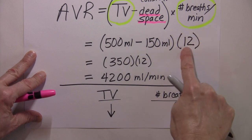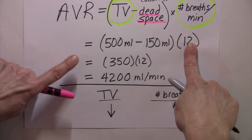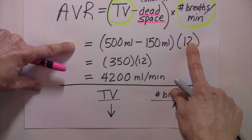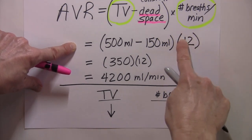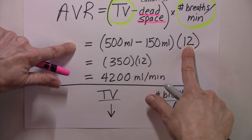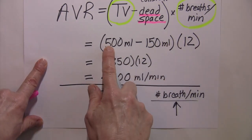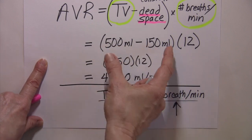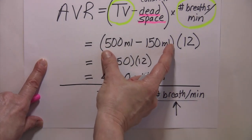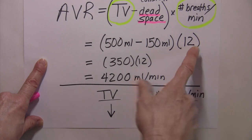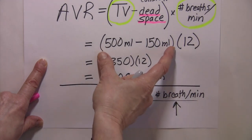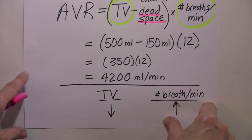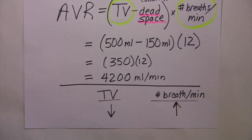And so when you apply that knowledge to this equation, you can see what will happen. If this number goes up, it would seem like the alveolar ventilation rate would go up and it might go up, but there's a point where if this number goes up really high, like in hyperventilation, and it brings your tidal volume down to 150, do you see how 150 minus 150 would zero this part of the equation out? So it wouldn't matter how high this number is. If you ever zero this part of the equation out, alveolar ventilation goes to zero. And so that's just an interesting observation I wanted to share with you about this.